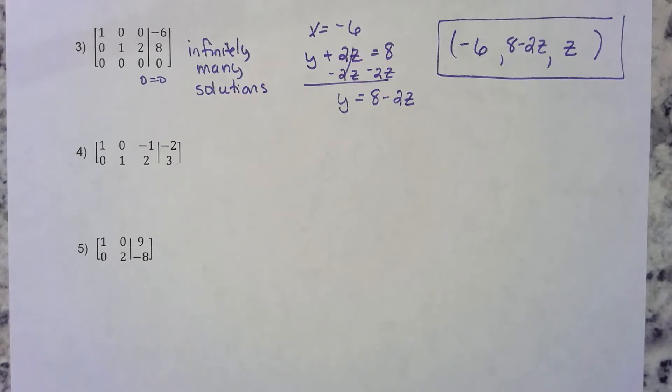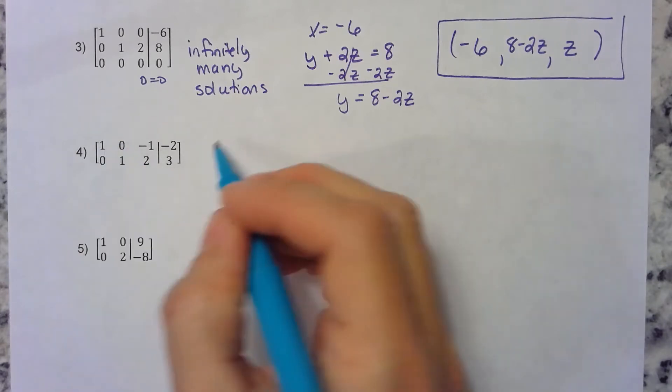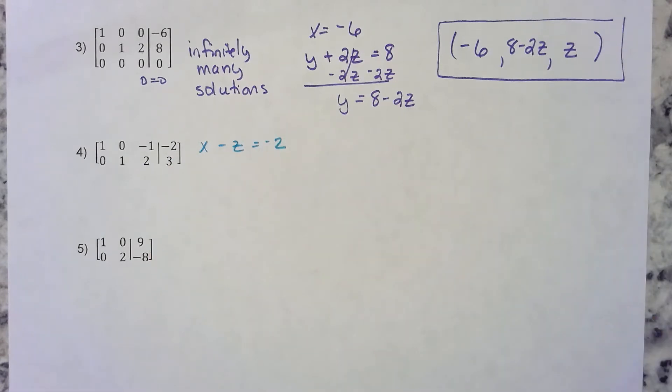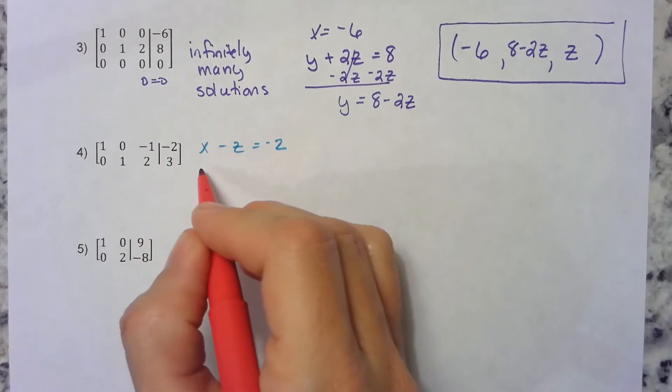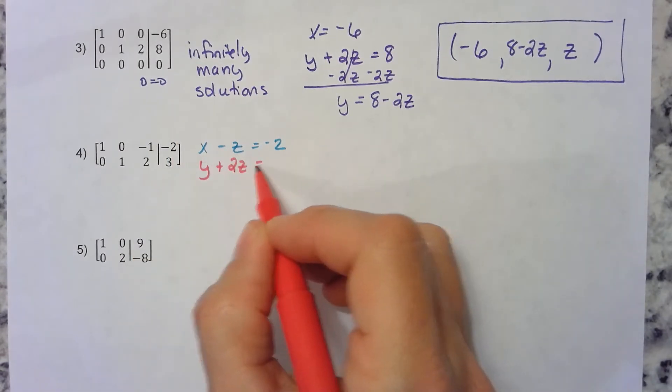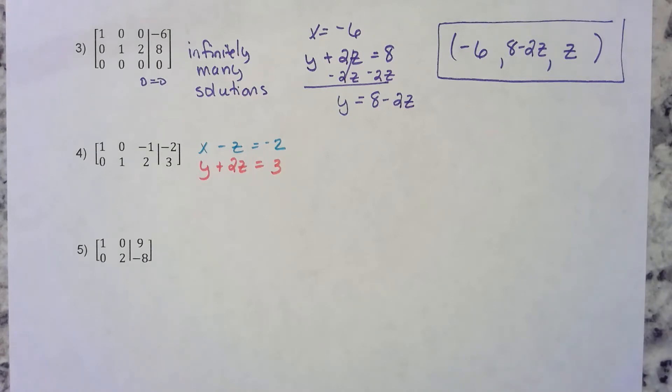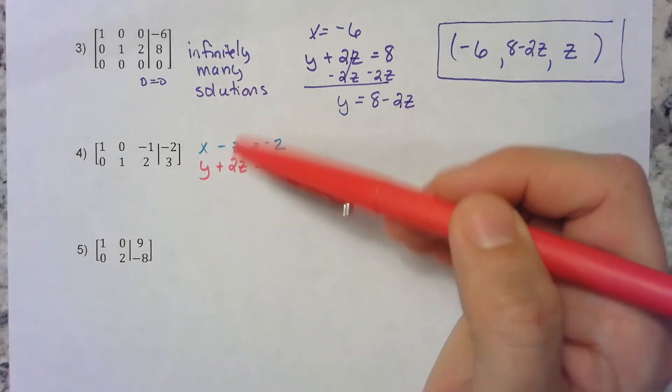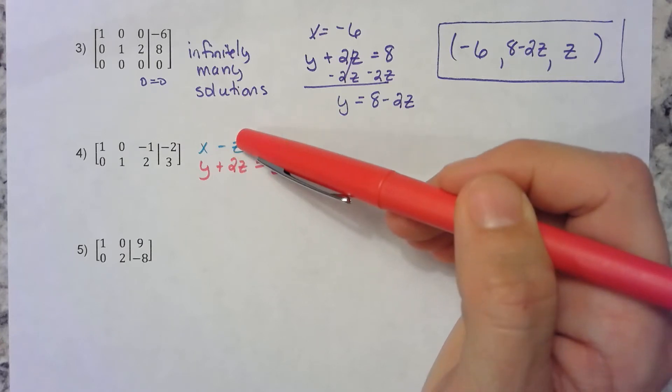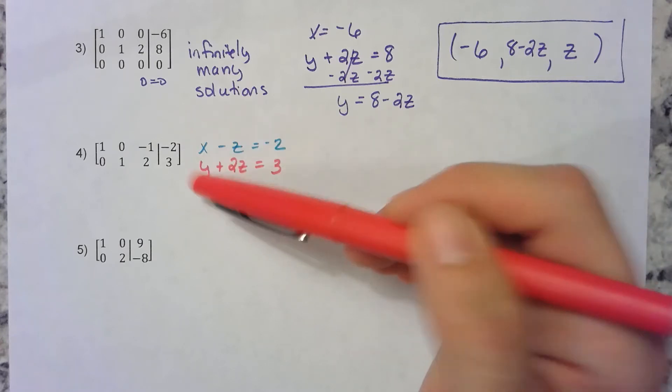The first line means x minus z equals negative 2, and the second line means y plus 2z equals 3. Notice how both of these have z's in them. Since they both have z's, let's solve for the other variables.